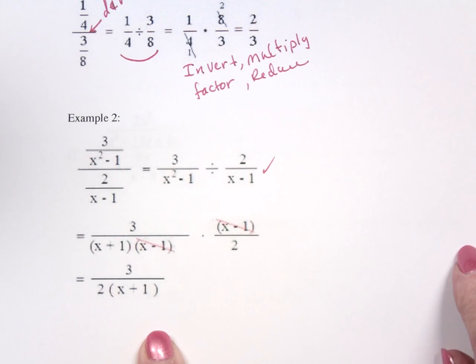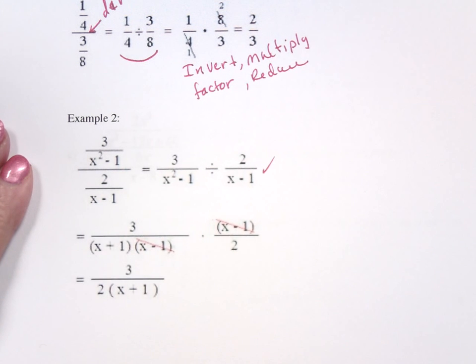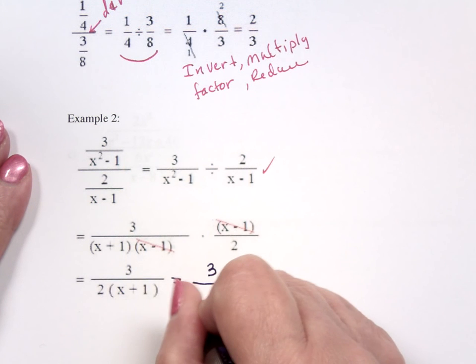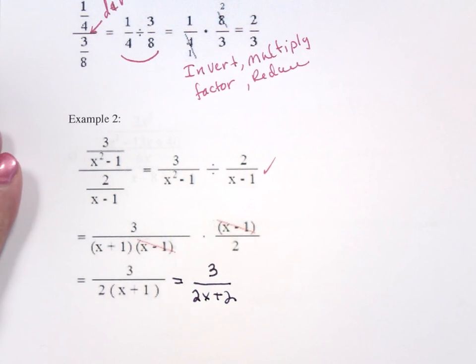And so you end up with 3 over 2 times x plus 1. Now if you want, you can write this as 3 over 2 times x plus 2. That's the same answer. And you're safe either way.